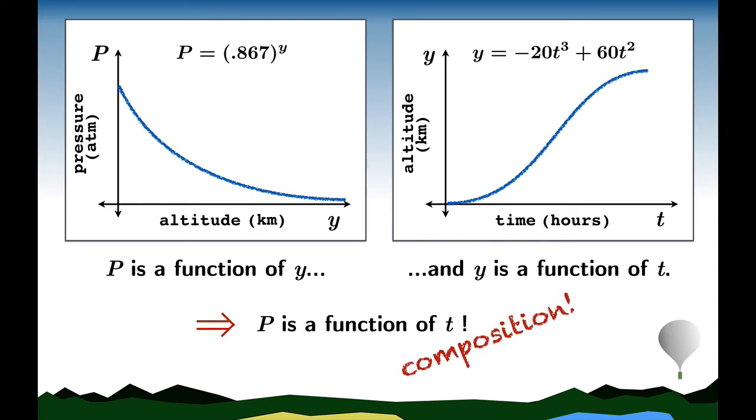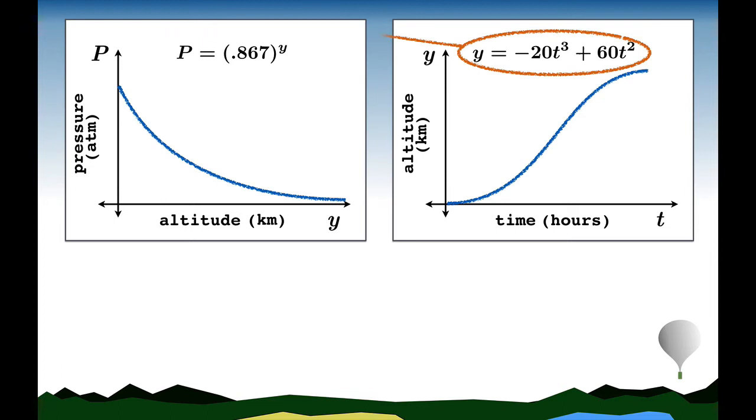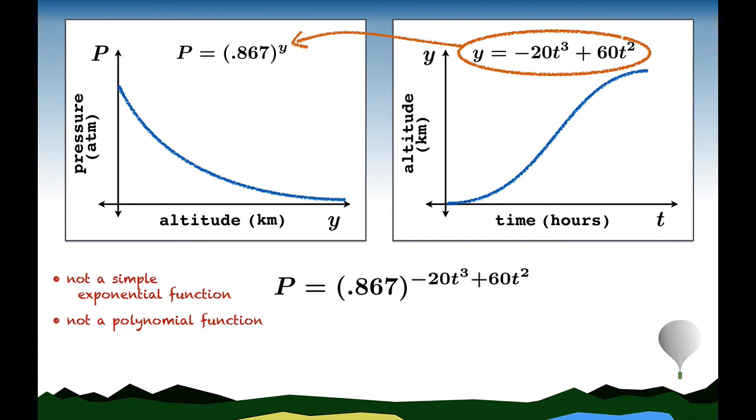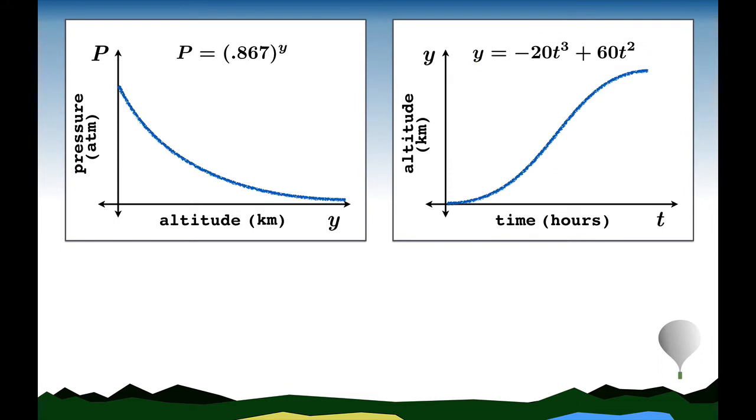You're taking the output of one function and inserting it as the input of another function. Now in this case, the output of your altitude function can be plugged directly into the input of the pressure function, and you get an explicit formula for p in terms of t. We'll notice that this is not a simple exponential function. It's not a constant raised to a variable, and it's not a polynomial function either. And it's really not even a simple sum or product or difference of these kinds of functions. So at this stage, we're stumped by this question of what dp/dt is. The way to get unstuck is to apply the chain rule.